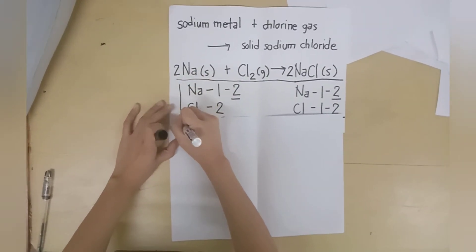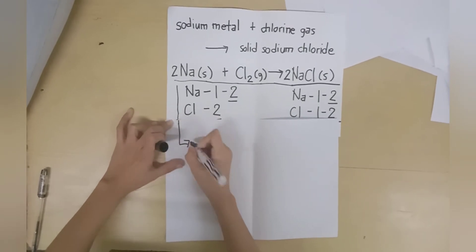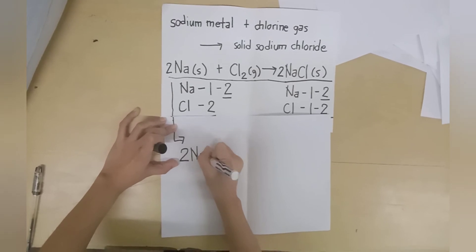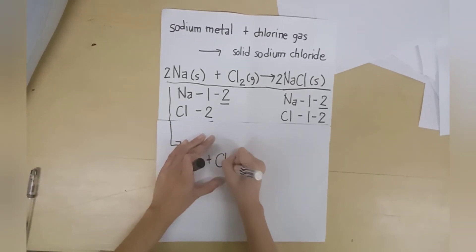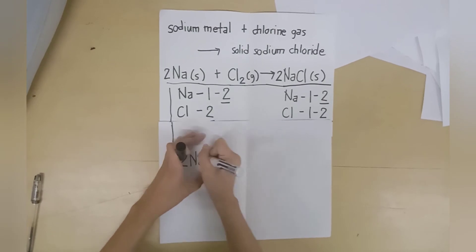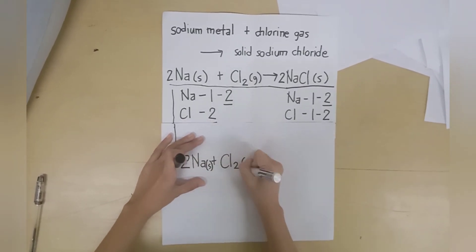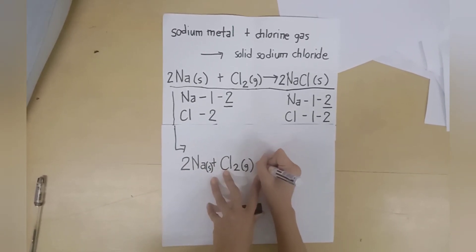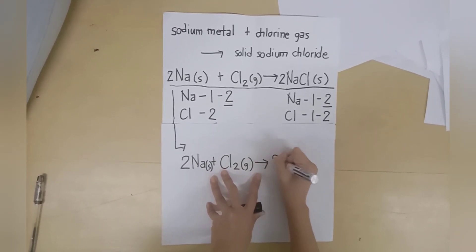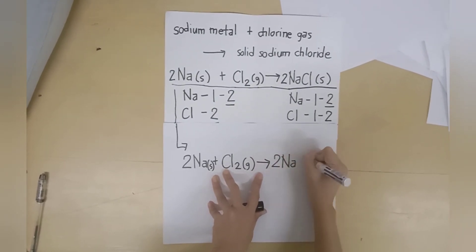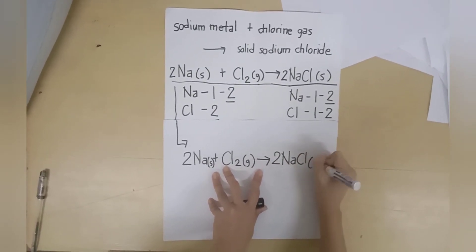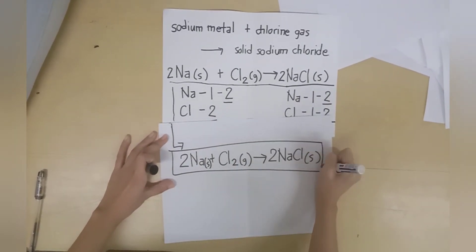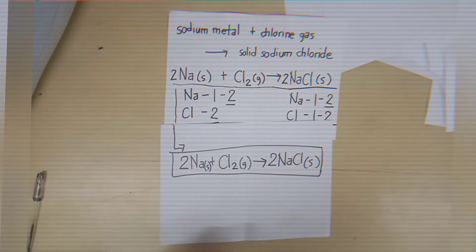So we have two moles of sodium reacting with one mole of chlorine gas to form two moles of sodium chloride in solid state. This is now the balanced chemical equation for the formation of sodium chloride.